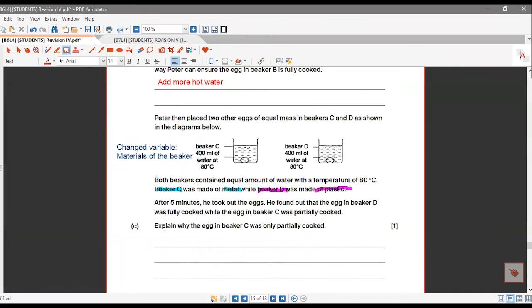So the change variable here is the materials of the beaker. Now, C is a metal beaker. D is a plastic beaker. But the Beaker C, the egg in Beaker C was only partially cooked.